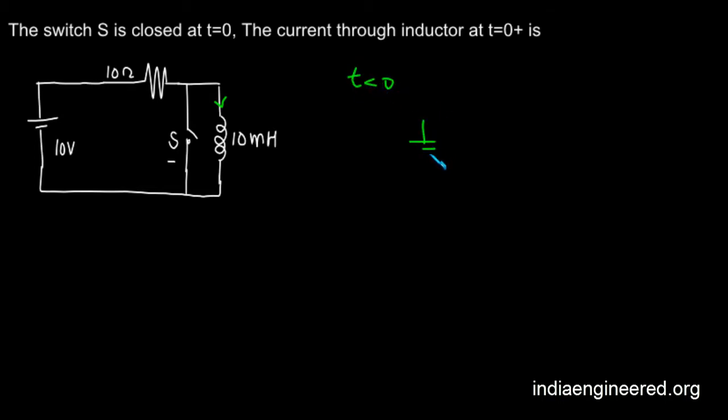We have 10 volts, the 10 ohm resistance, and the inductor. So what will be the current? We have 10 volts, 10 ohm, and 10 millihenry. This means the switch S was opened for a long time.